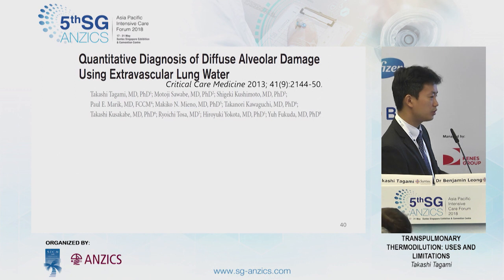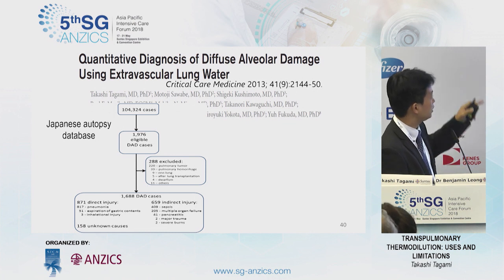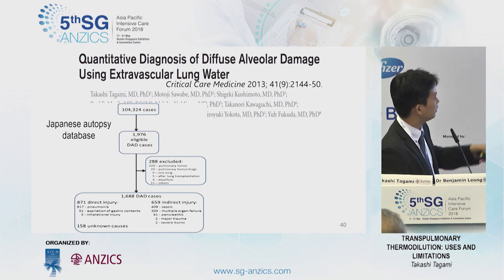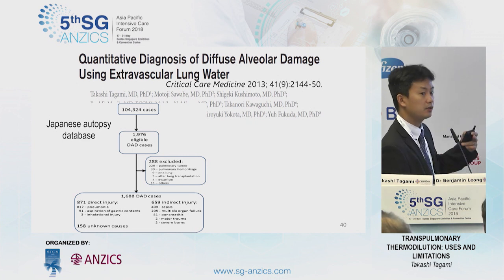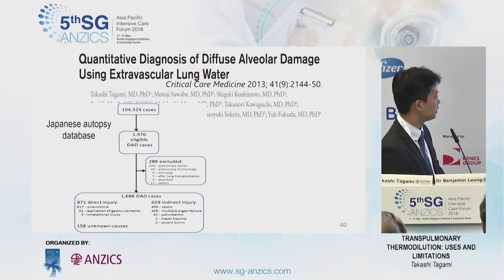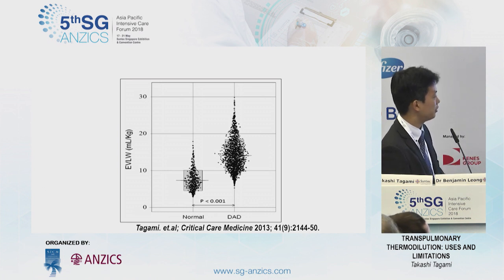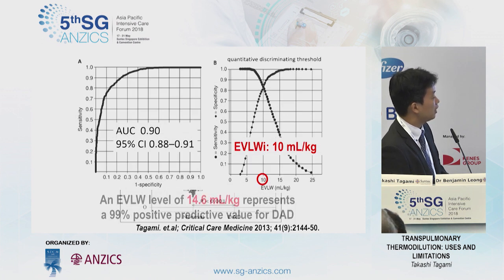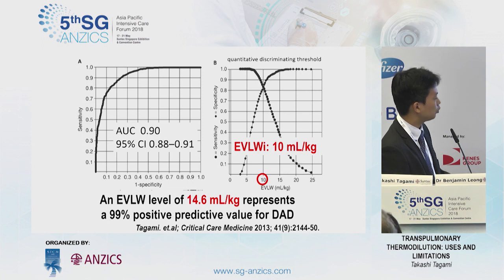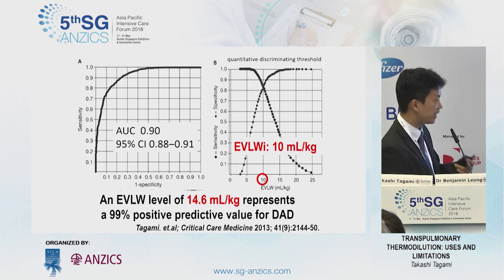How about the correlation with pathology? In Japan, every autopsy case is registered in the Japanese autopsy database. We evaluated 1,680 patients who had diffuse alveolar damage — the typical pathological finding of ARDS. Using our formula to estimate extravascular lung water, we found a significant difference between normal lung and patients with diffuse alveolar damage. An extravascular lung water value of 10 mL/kg may be the quantitative discriminating threshold for detecting alveolar damage, and a level of 15 mL/kg represents a 99% positive predictive value for detecting diffuse alveolar damage.